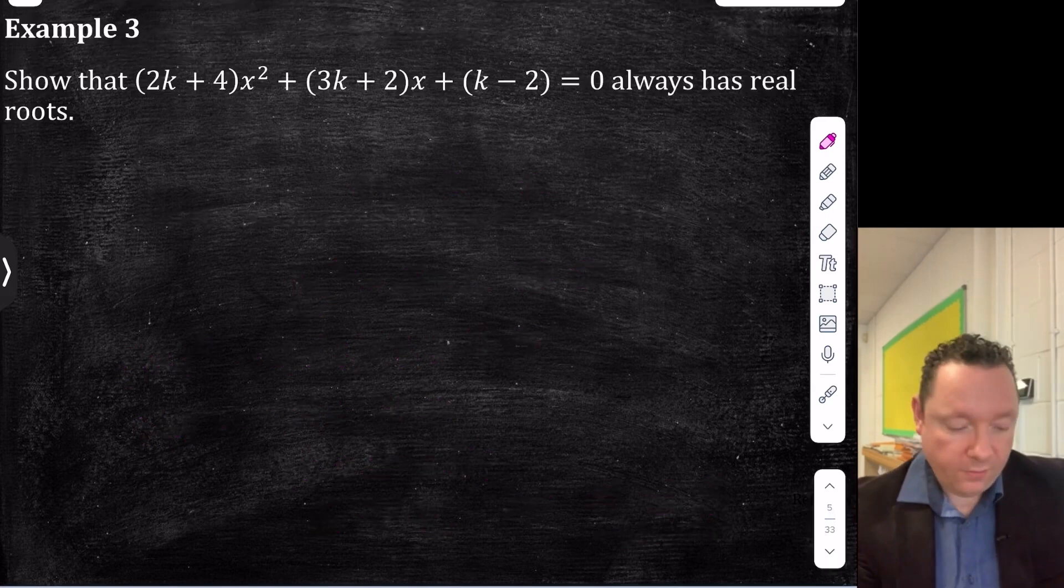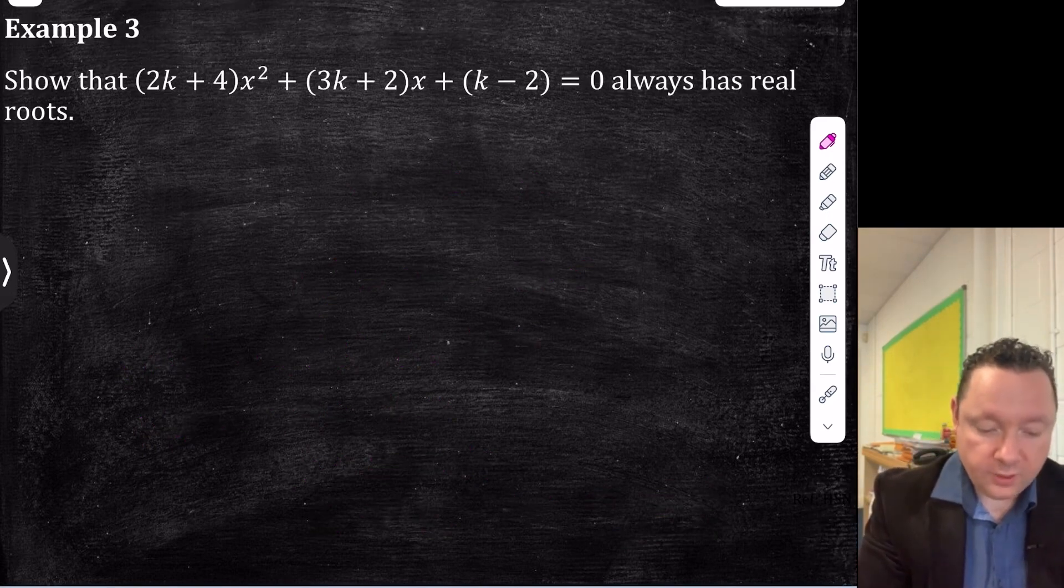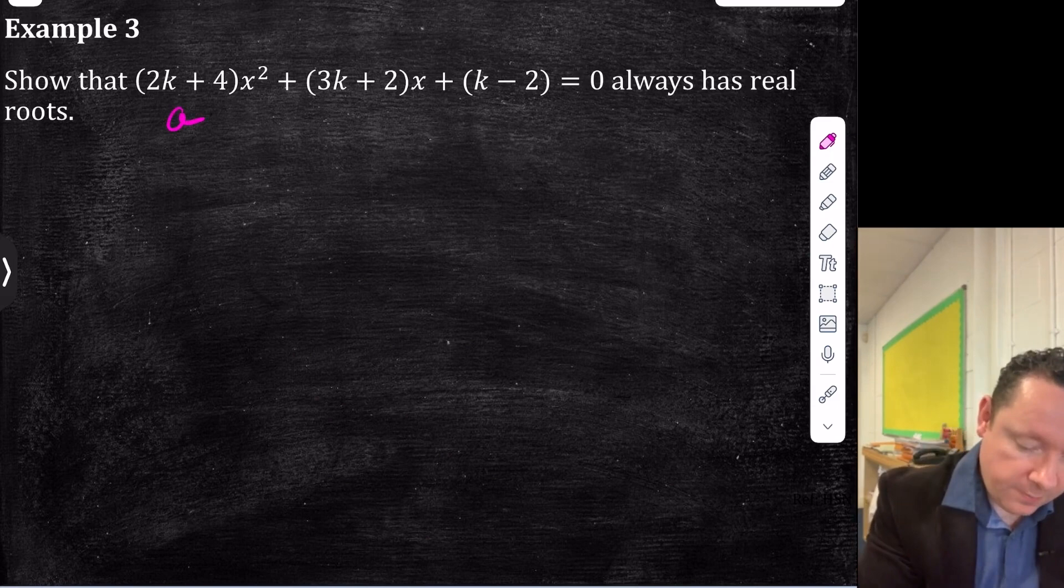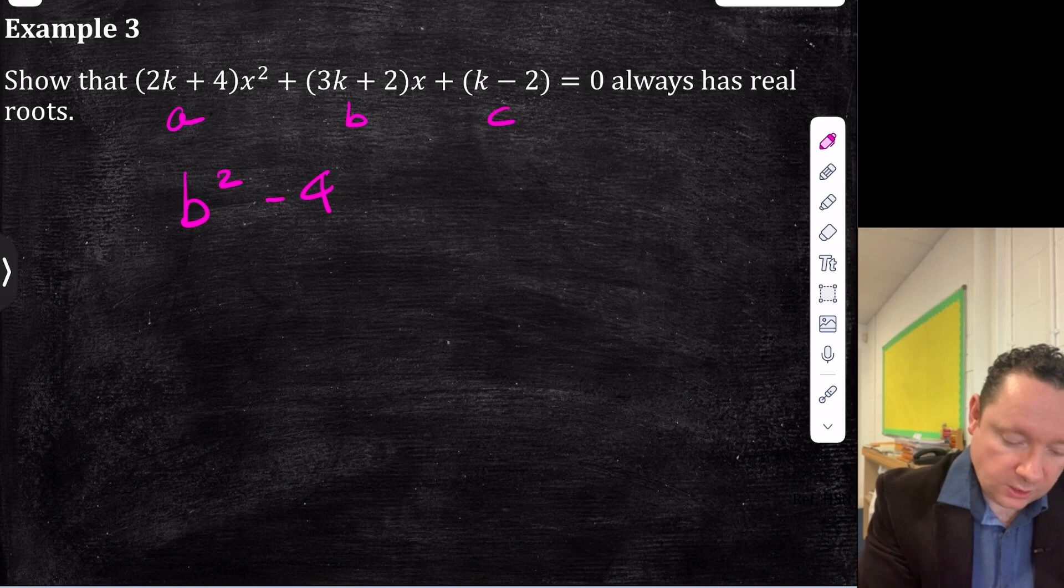Okay, a further example like that. Example three says show that (2k + 4)x squared plus (3k + 2)x plus (k - 2) always has real roots. So we have to prove it's got real roots this time. So let's do our a. There's our a. There's our b. There's our c. So subbing it in, we've got b squared minus 4ac. We're just going to see what we get.